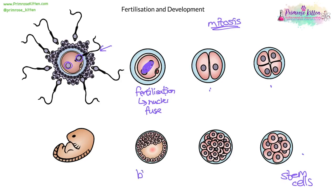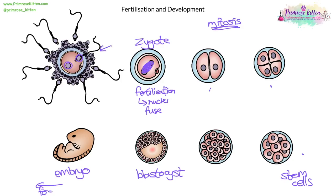Then you get a stage called the blastocyst when it's large enough, and then you've got an embryo. This one at fertilization is a zygote. When it starts to look like a little tiny human, it's an embryo, and it gets bigger and bigger. After a couple of weeks, when it is larger, it gets called a fetus — and it's called a fetus until birth. After birth, it gets called a baby.